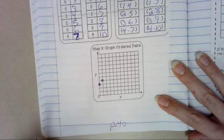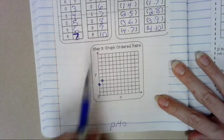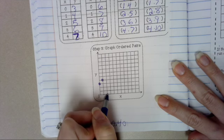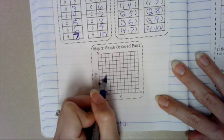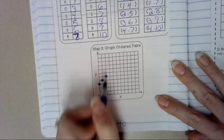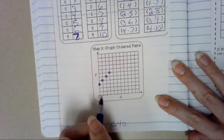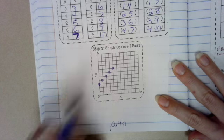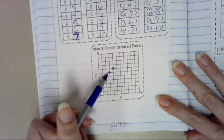Put a point. Our next coordinate is 2, 5. Right 2. Up 5. For 3, 6, we're going to go right 3. Up 6. Our last one, we go right 4. Up 7. You can connect the dots if you want to, but you don't have to.